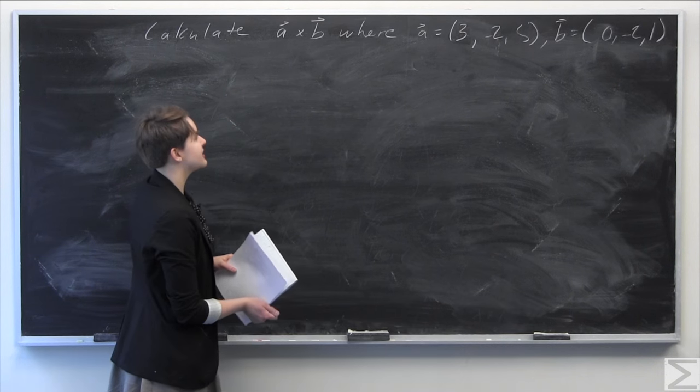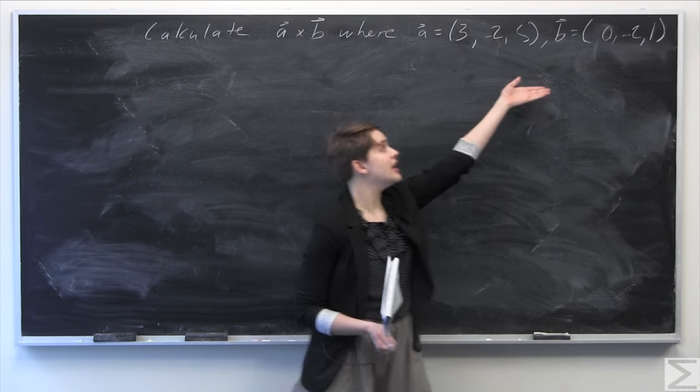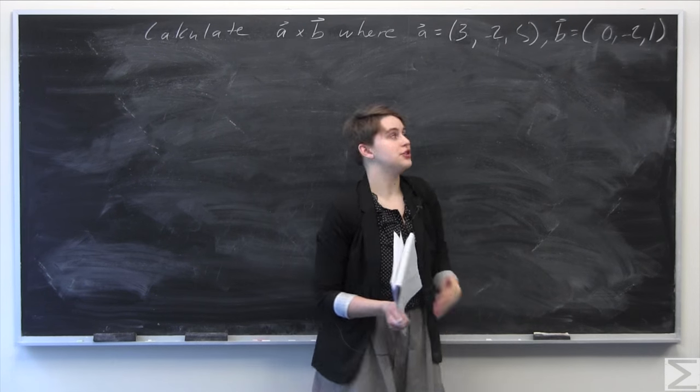This problem asks you to calculate the cross product A cross B, given these two vectors: A is equal to (3, -2, 5), and B is equal to (0, -2, 1).